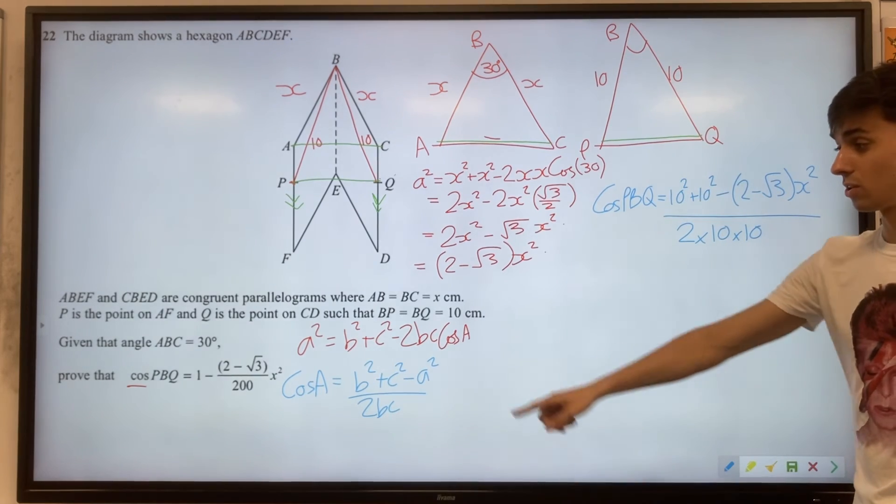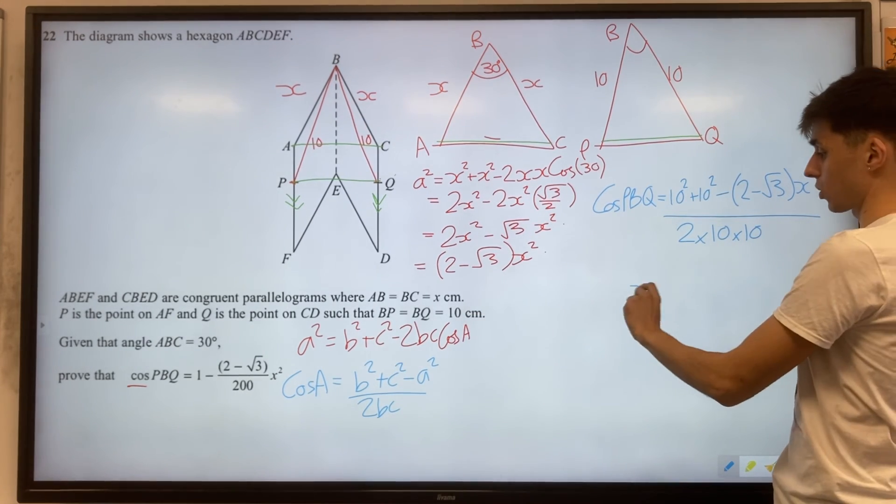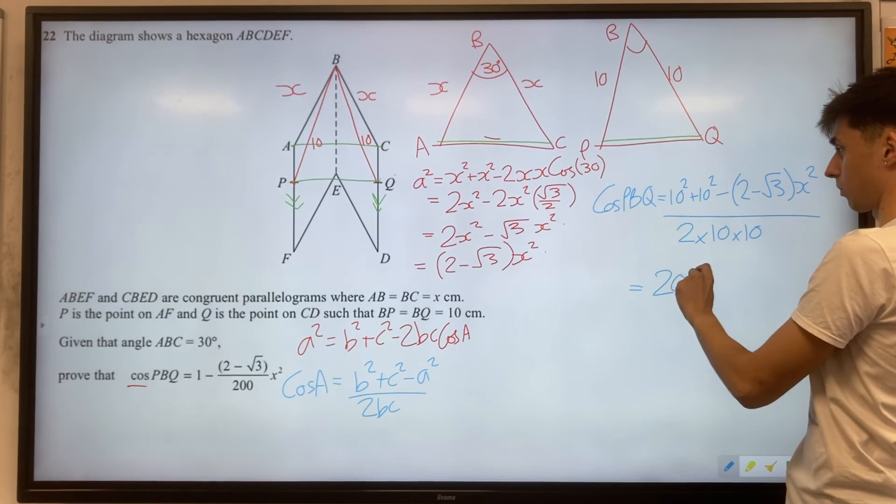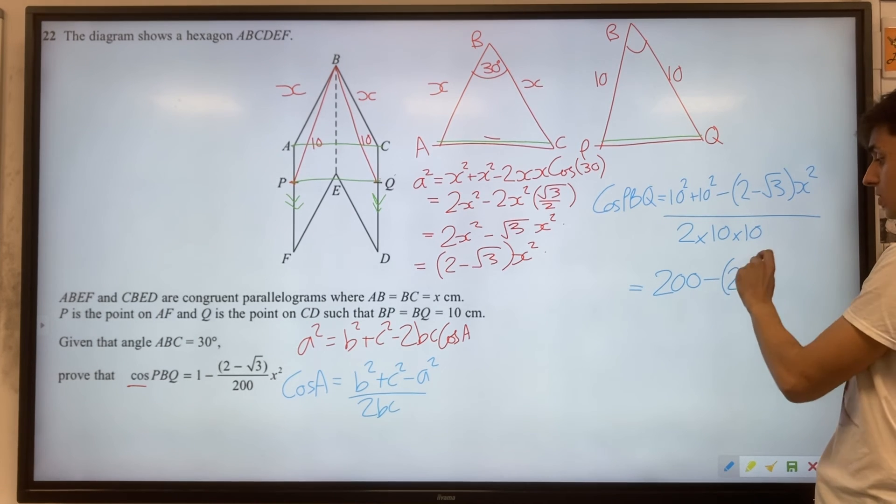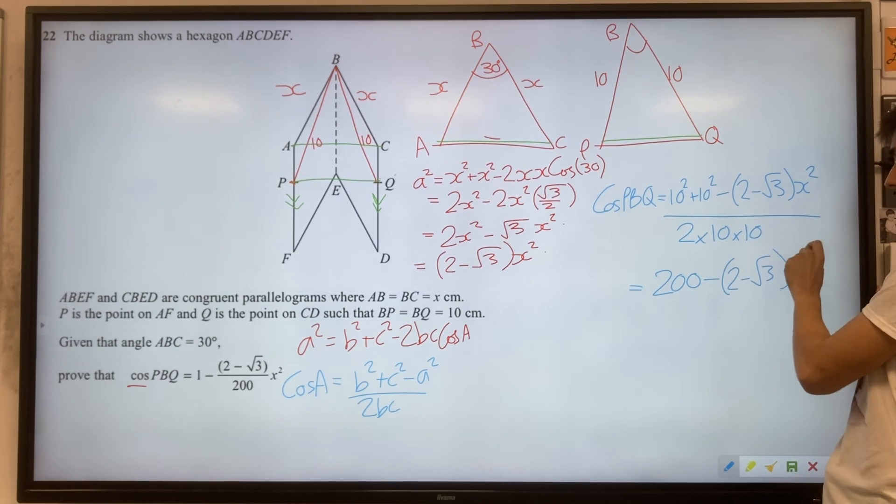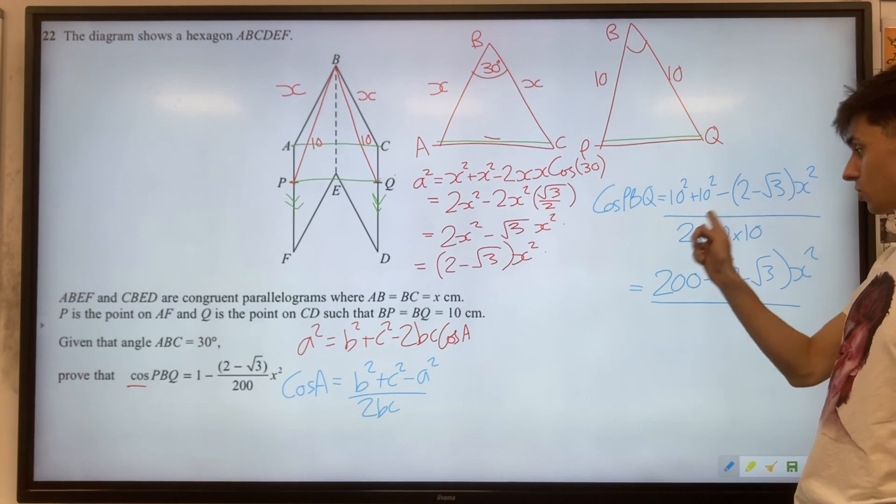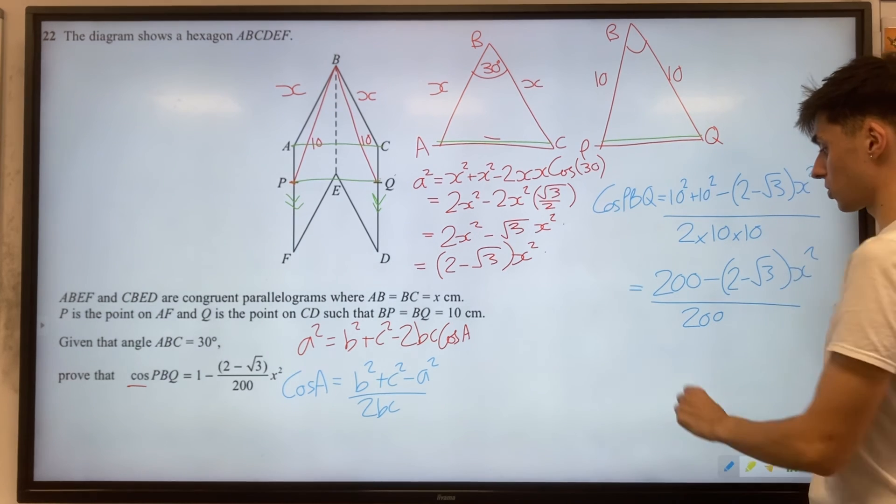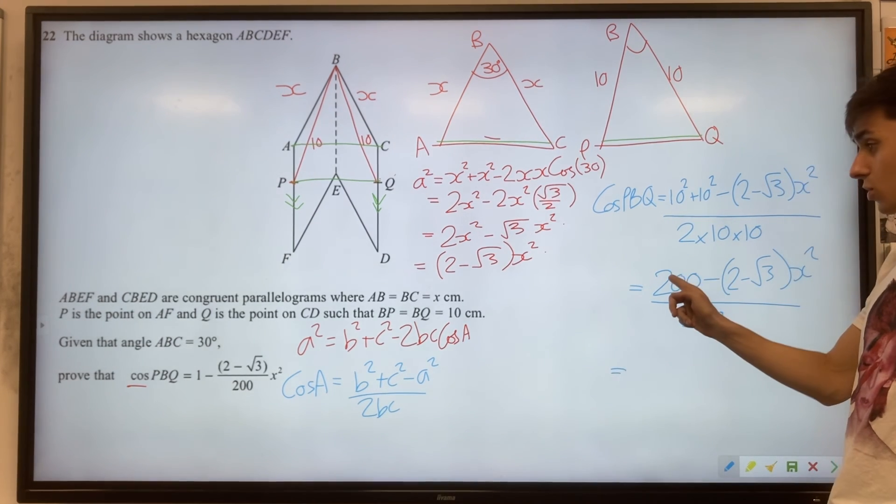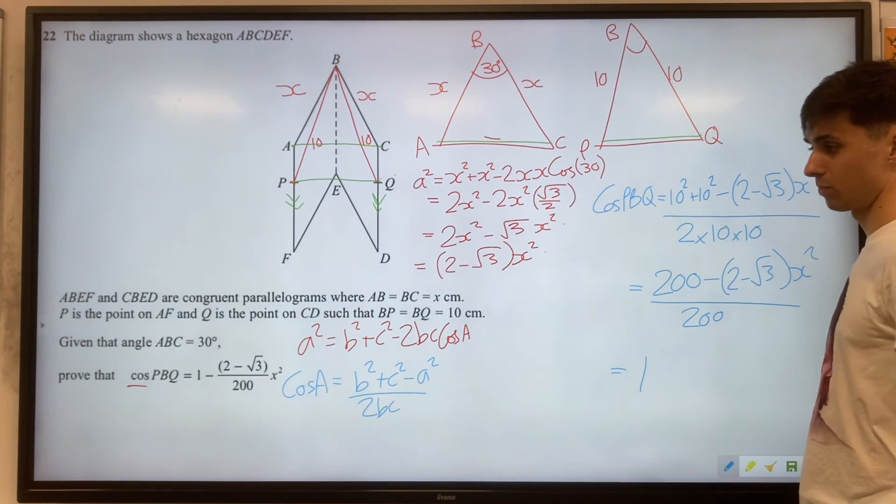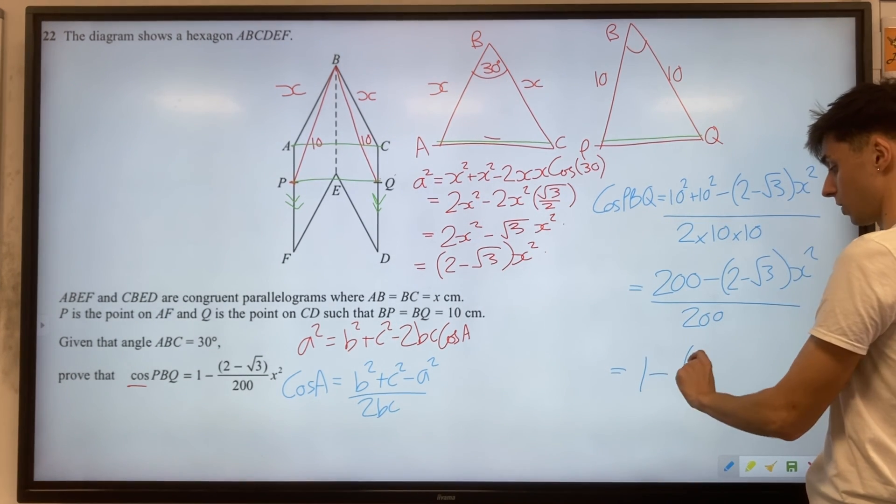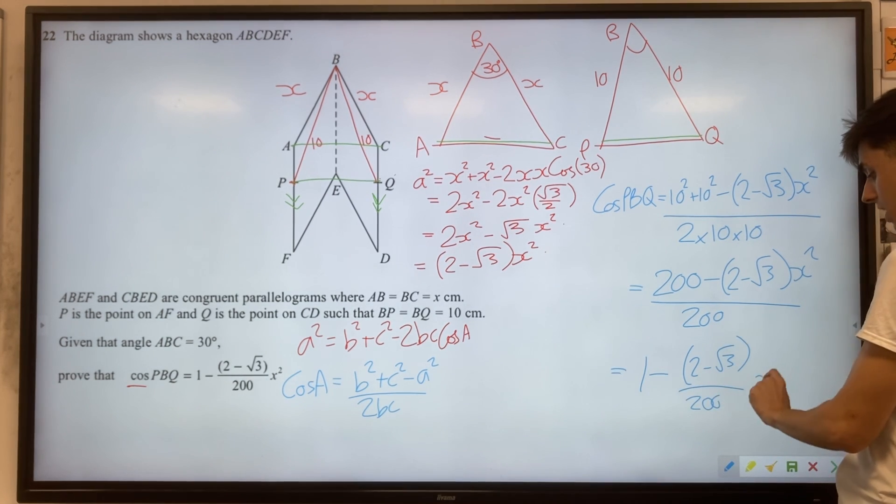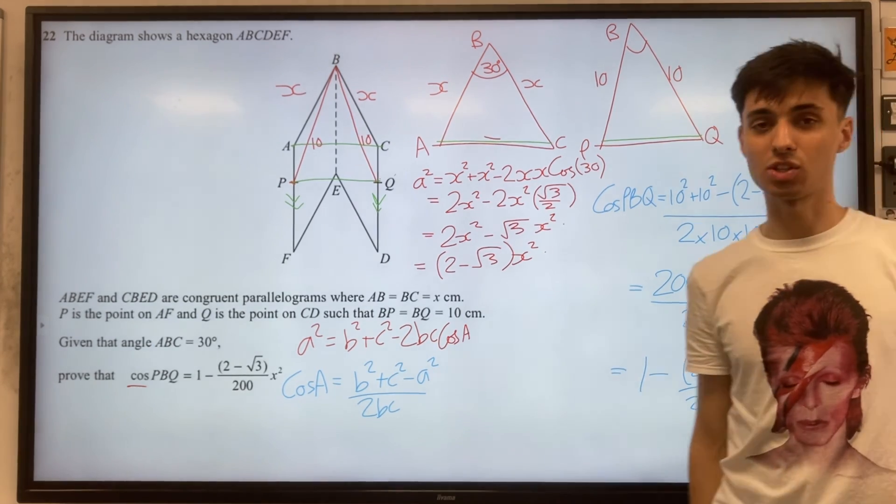Now it's just a case of simplifying. Our answer is looking pretty good compared to what we want, but we need to sort out a fraction. So 10 squared plus 10 squared, that's 200. We've got minus 2 minus root 3 X squared. And on the bottom of the fraction, 2 times 10 times 10 should again be 200. A little bit more simplifying for us. Well, 200 over 200 is just 1. And for this fraction, then, that leaves us with 2 minus root 3 over 200 X squared. That's exactly what they wanted us to show.